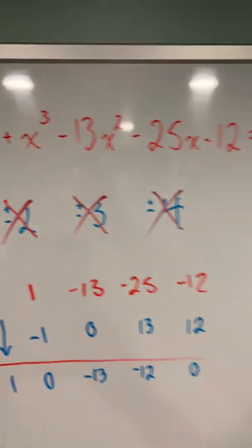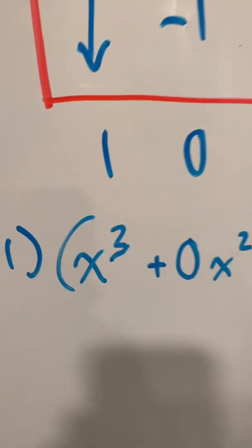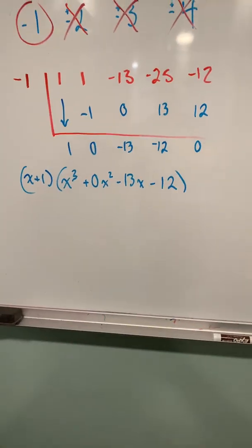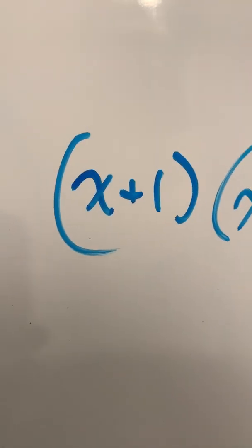We repeat that process until we get 0, because remember that negative 1 made this polynomial equal to 0. The results of our synthetic division become the coefficients of a new polynomial of degree 3, that is also multiplied by that original x plus 1 factor.